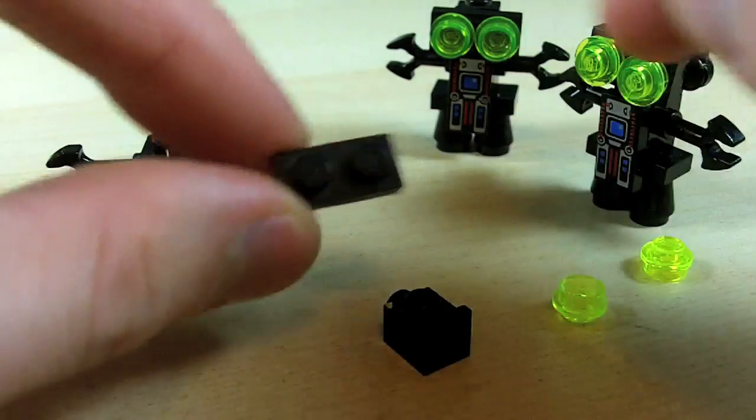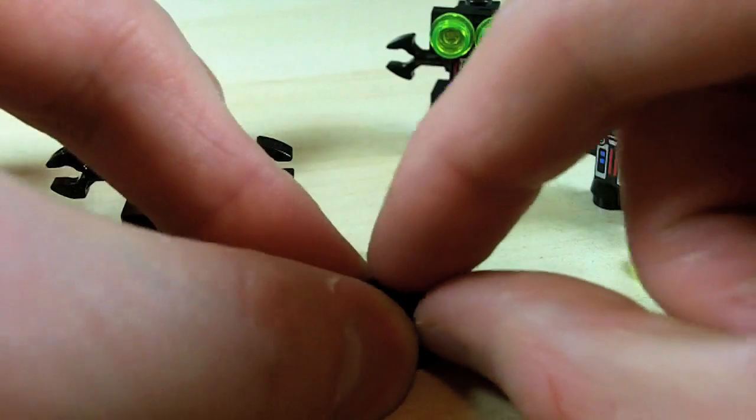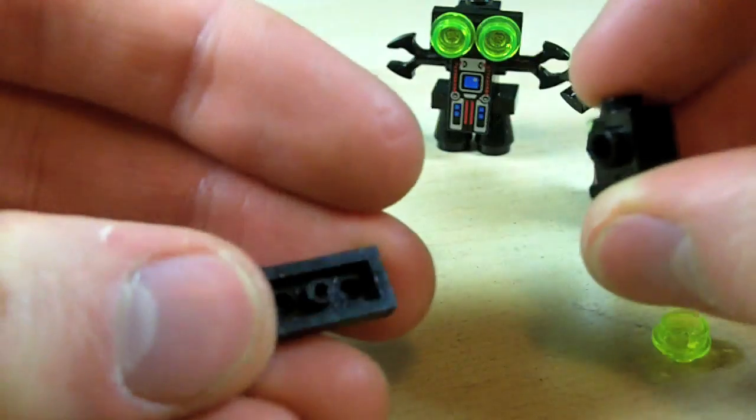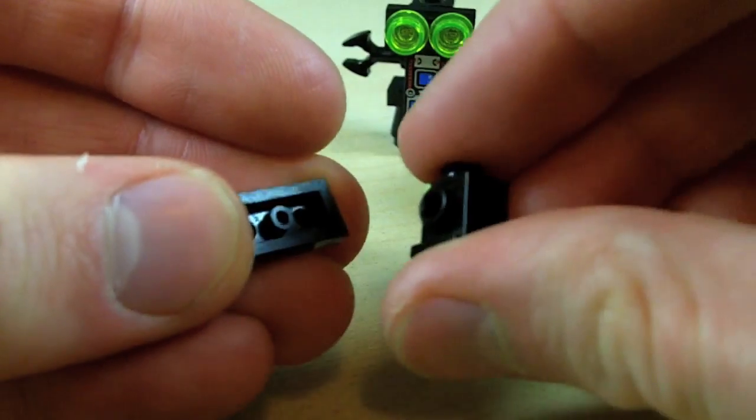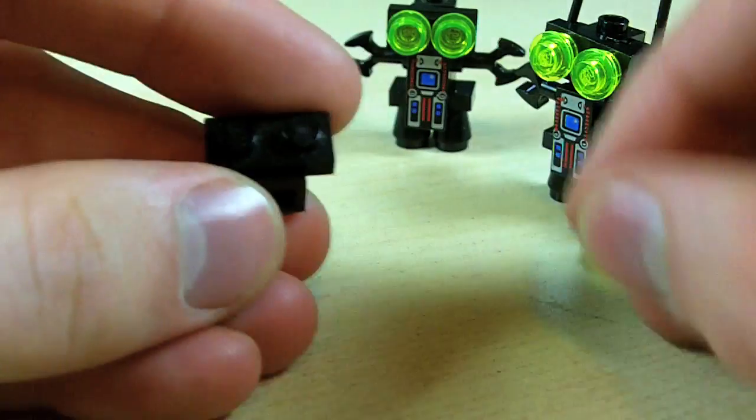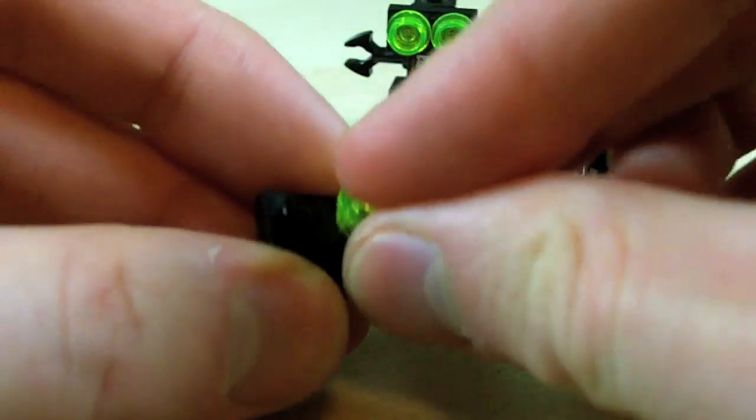And then put a 1x2 plate on that. Like that. Which is a tricky technique if you don't know how to do it. But basically, see this little thing in the middle there? You're going to stick that in the hole of the front of the light there. And then give it some eyes.